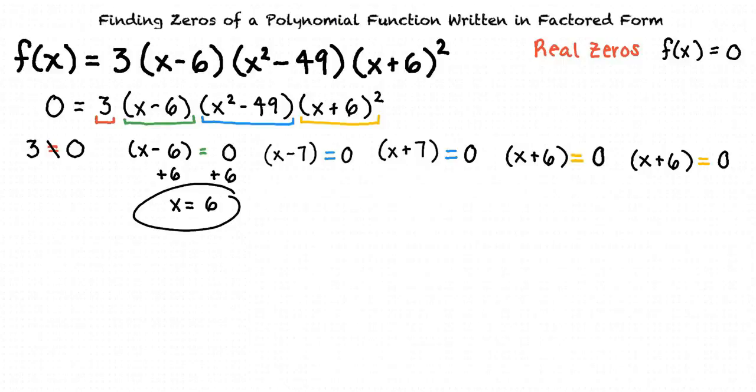Next, we have the factor x - 7 set equal to 0. We will add 7 to both sides, giving us the real zero of x = 7. Now we have the factor x + 7 set equal to 0, and we can subtract 7 from both sides to get our third real zero of x = -7.